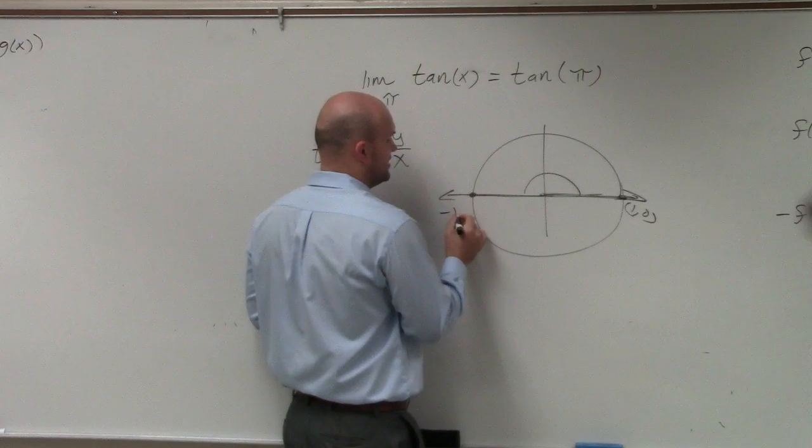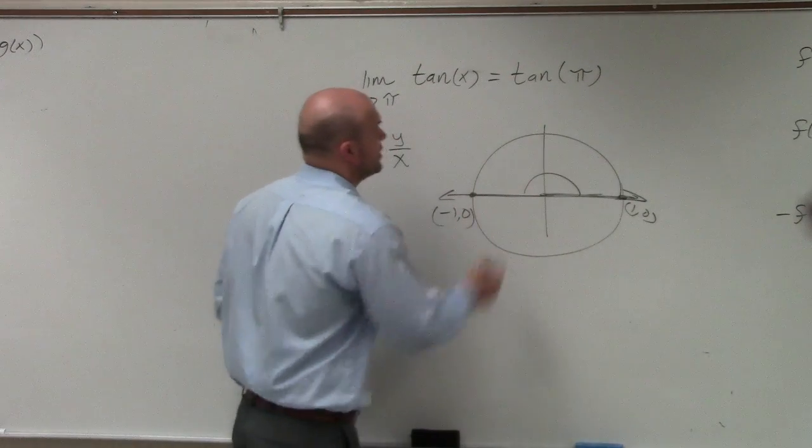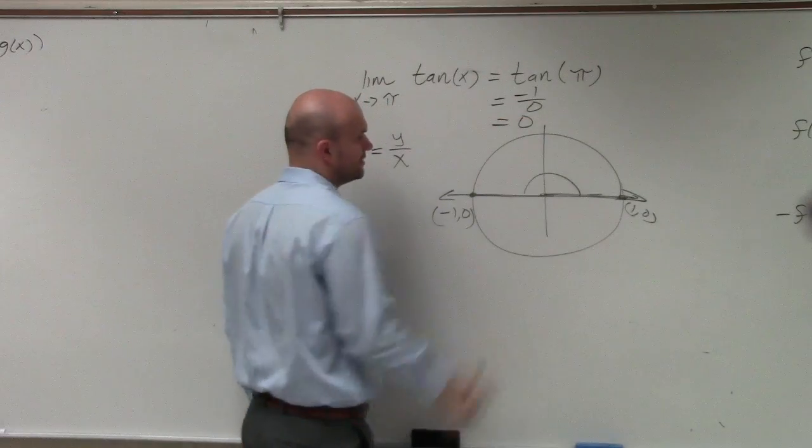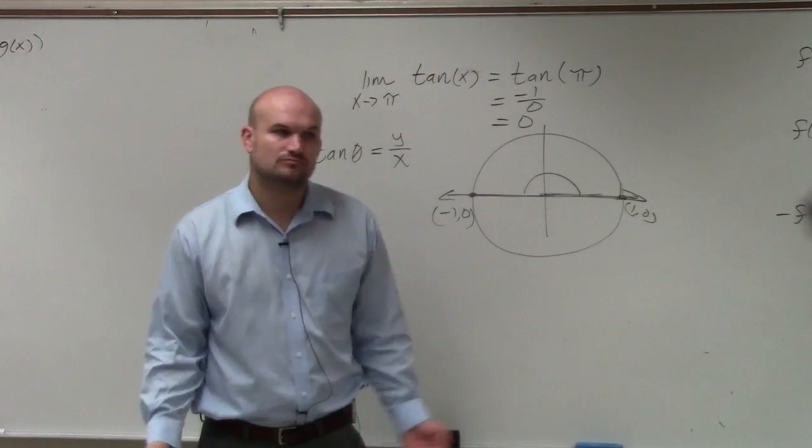This point is negative 1, 0. So therefore, what we'd have is tangent of pi equals 0 over negative 1, which is just equal to 0. And that's basically it.